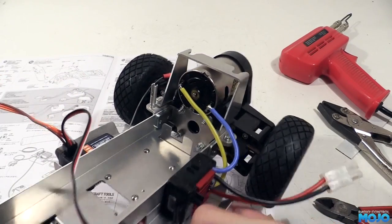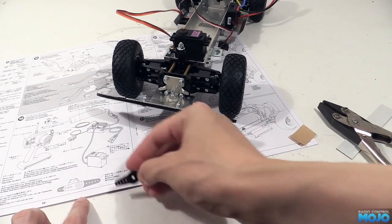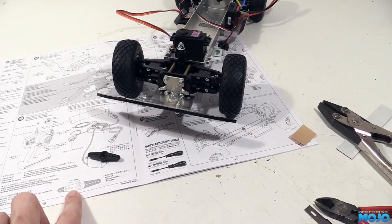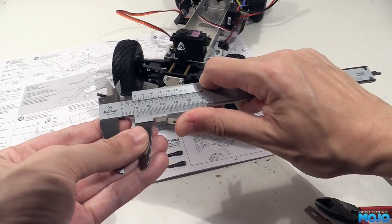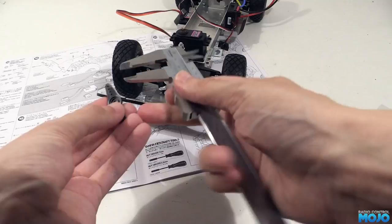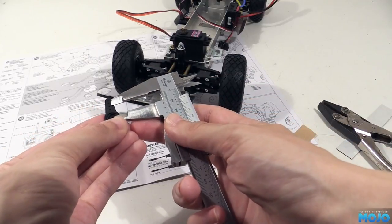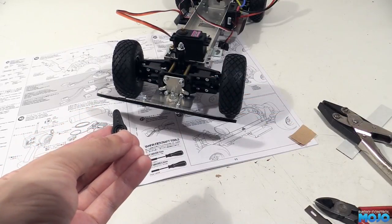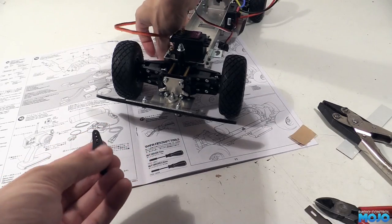Servo arm now. The manual has a little diagram that says the push rod wants to be in a hole 10-11mm from the centre. On this arm, it's the second hole. The arm that comes with the kit has Futaba splines, which matches the Tower Pro servo, so I'm going to be using that.